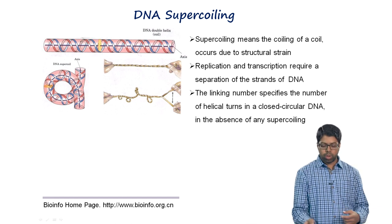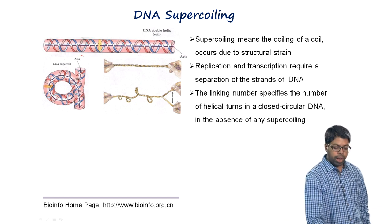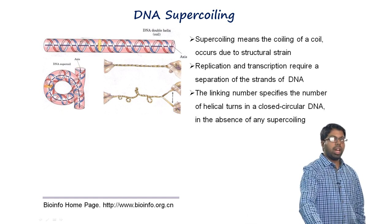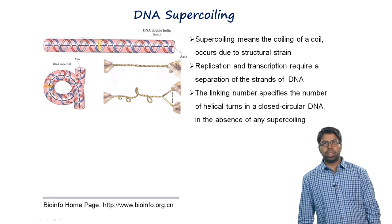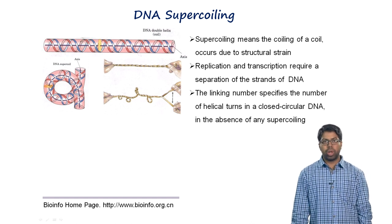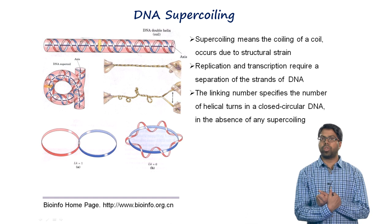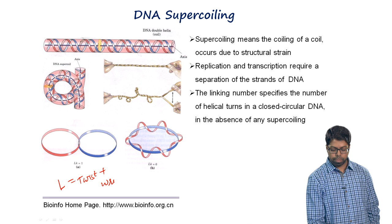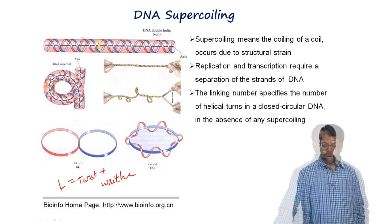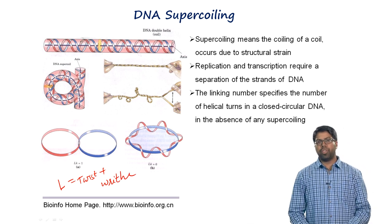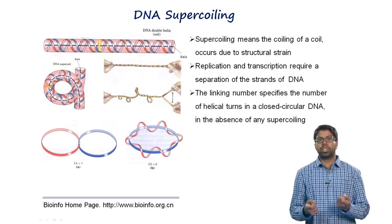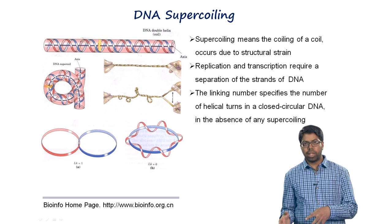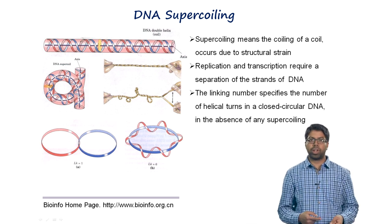Supercoiling can be understood using the concept of linking number. Linking number is the number of times one strand passes over the other, and equals twist plus writhe. Twist is the number of helical turns, whereas writhe is the number of super-helical turns. You can think of twist as strands passing within the helix itself, and writhe as one helix crossing over another.